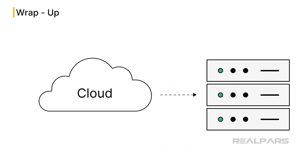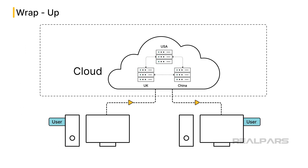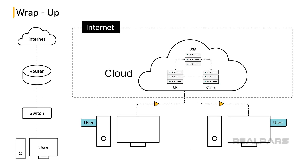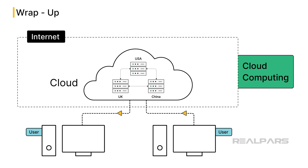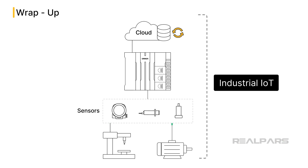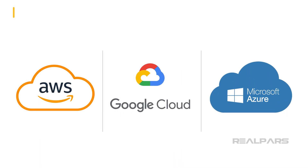Let's review. The cloud refers to physical devices called servers loaded with software and databases, physically located in brick-and-mortar data center facilities. The term cloud originated from early network diagrams where a cloud-shaped symbol represented the internet. Cloud computing delivers services like storage and processing over the internet instead of local hardware, meaning end-users do not have to manage physical servers or run software applications on their own machines. Cloud computing enables smart sensors and machines to connect, share, and process data in real-time, making it invaluable in manufacturing and automation. Cloud computing providers include Amazon Web Services, Microsoft Azure, and Google Cloud.